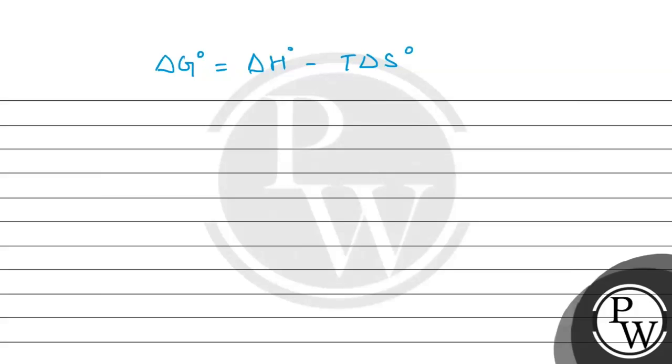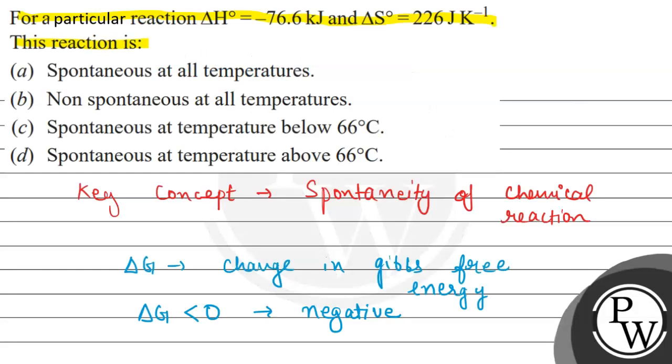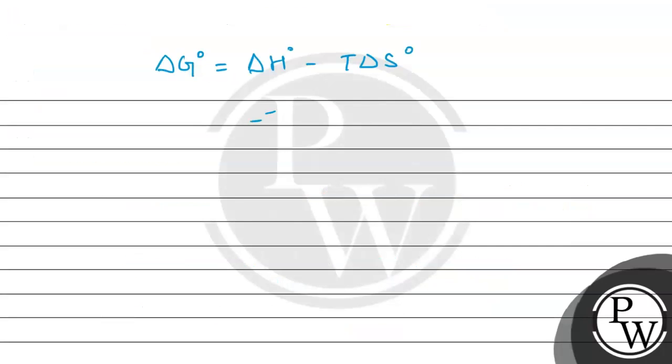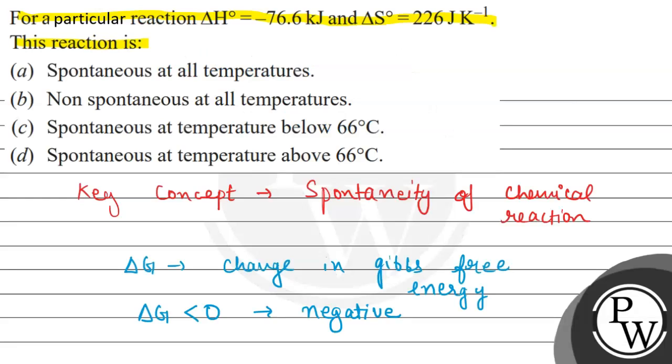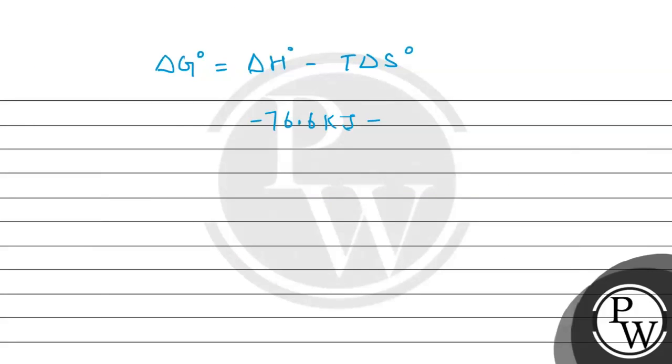For this, we can see we have ΔH° value given, that is -76.6 kJ, minus temperature, and 226 J/K.